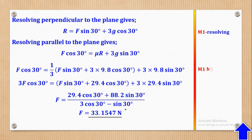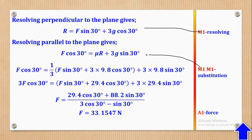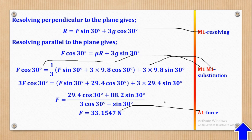That's what they wanted. Let's see how marks can be awarded: M1 for resolving, another M1 for the right-hand side, M1 for the left-hand side, and A1 for the output. That's how the 5 marks come about.